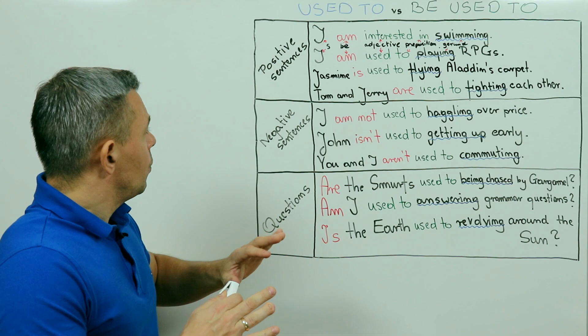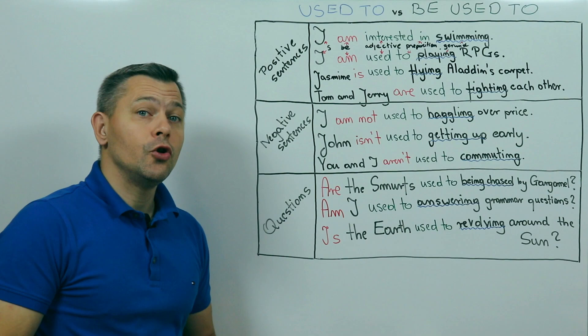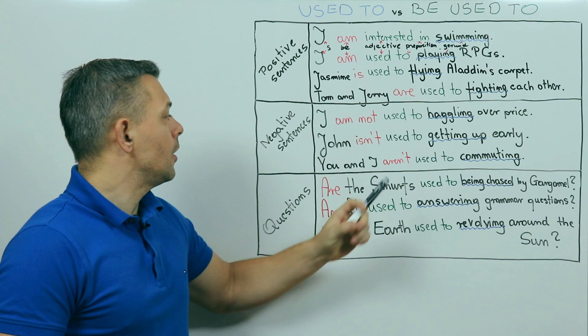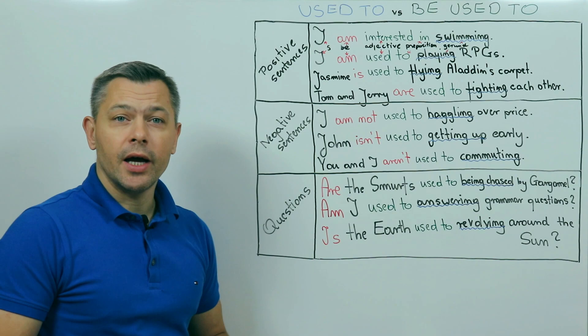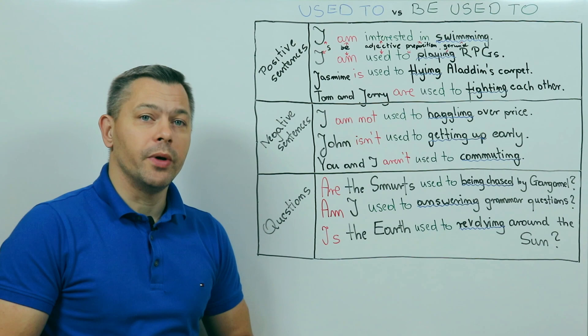To form a negative, we just add not, which negates the be. For instance, I am not used to haggling over price. In other words, I am not used to negotiating a lower price. Or, I am not familiar with trying to pay less. Some people are. I am not. I don't like it. Others do. Some accept it. Others see it as unethical.